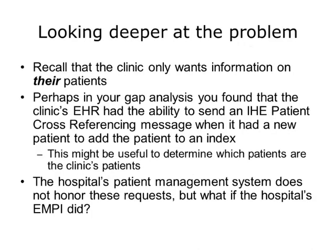There was another gap identified: the hospital sends messages about every patient admitted, but the Good Health Clinic EHR only wants information about their own patients. This is not a simple filter. Perhaps in the gap analysis, you found that the clinic's EHR had the ability to send an IHE patient cross-referencing message when it had a new patient, to add the patient to an index. If the hospital EMPI supports these requests, all of Good Health Clinic EHR's patients and all of the hospital's patients could be added to the EMPI and cross-referenced to each other. Then, when a Good Health Clinic patient is admitted to the hospital, the EMPI is queried for the patient, it is determined that the patient is a Good Health Clinic patient, and the admit message is forwarded on to the Good Health Clinic EHR.